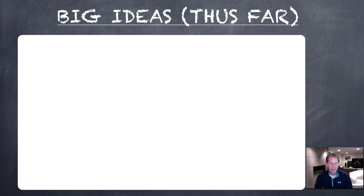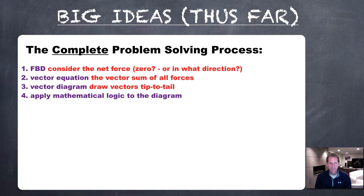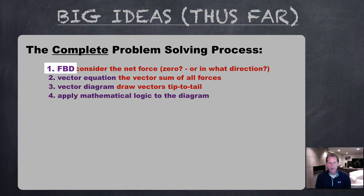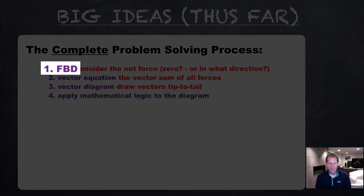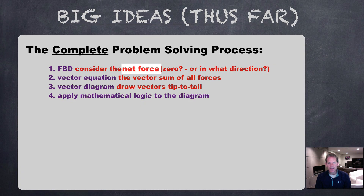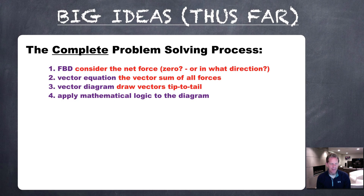Let's recall the big ideas we've got so far. We've looked in the last two screencasts at a comprehensive problem-solving process with four stages. The first stage is key: we're building a free body diagram, drawing forces as vectors, paying attention to their magnitude and direction. As we do that, we're thinking about the net force — is it zero, in which case the forces should balance, or should there be a net force, and in what direction?